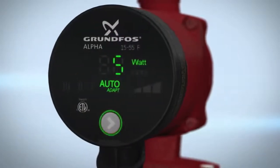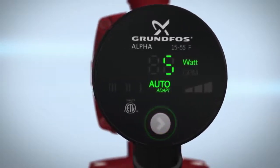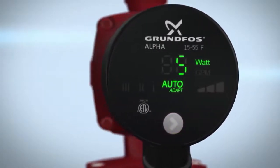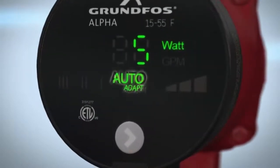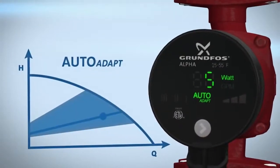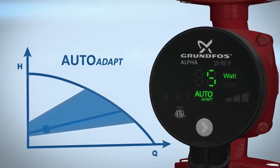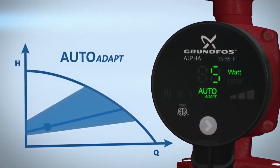The Alpha has an easy push button for selection of pump settings. Every time the push button is pressed, the circulator setting is changed. Your pump is factory set to auto-adapt. Using adaptive intelligence, auto-adapt senses and learns actual system conditions and adjusts the pump performance to match demand.